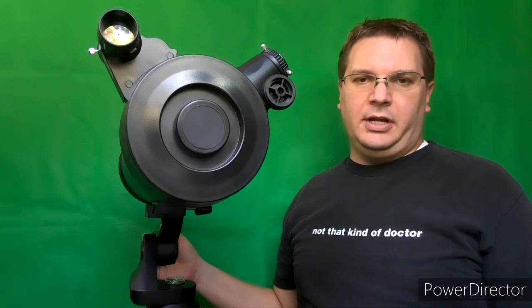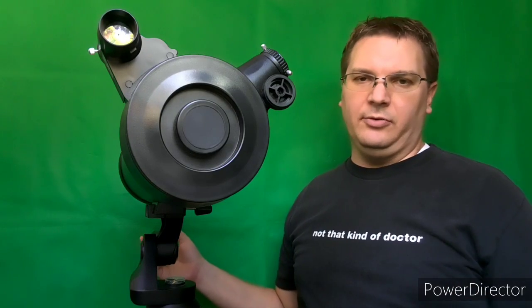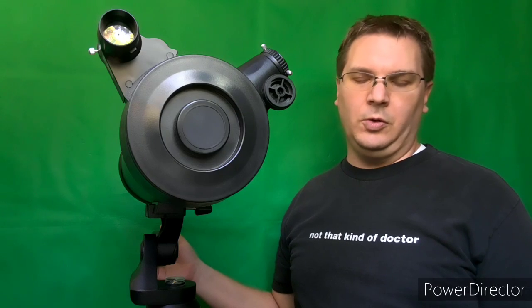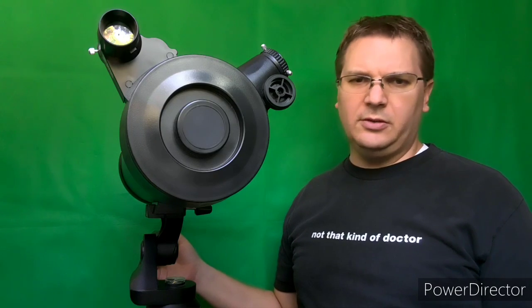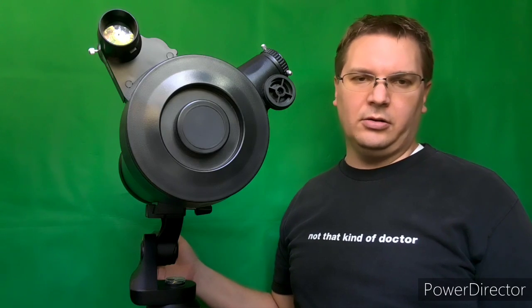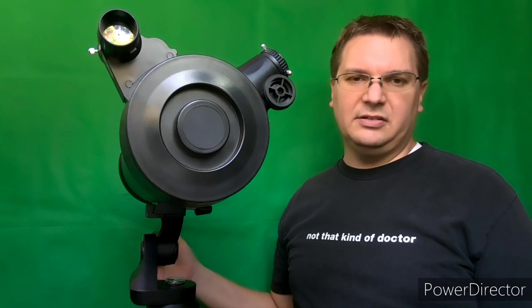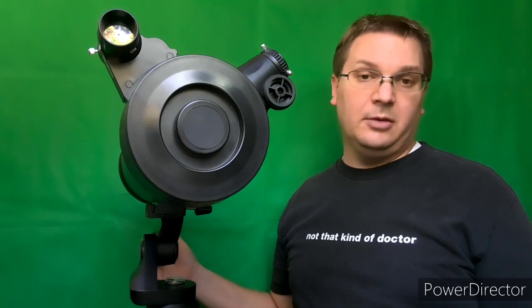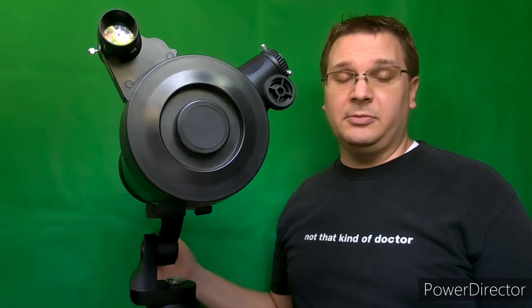Today I want to review the National Geographic carbon fiber 114 millimeter Newtonian telescope. You can get this for around $60 to $80, pretty good prices everywhere from eBay to Sam's Club even, sometimes even on Amazon.